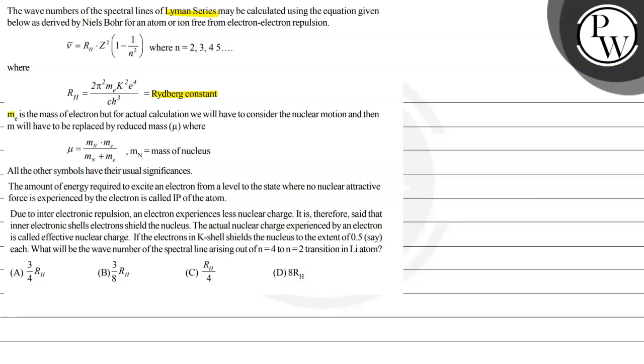m_e is the mass of electron, but for actual calculation we will have to consider the nuclear motion and then m will have to be replaced by reduced mass μ, where μ equals m_n m_e divided by m_n plus m_e, where m_n is mass of nucleus. All other symbols have their usual significance. The amount of energy required to excite an electron from a level to the state where no nuclear attractive force is experienced by the electron is called IP of the atom.